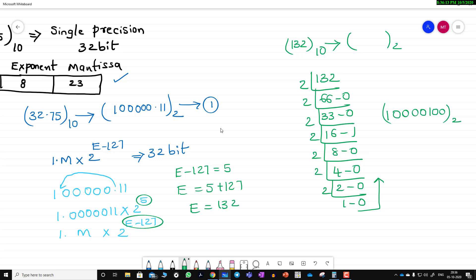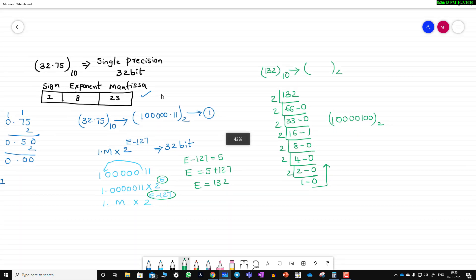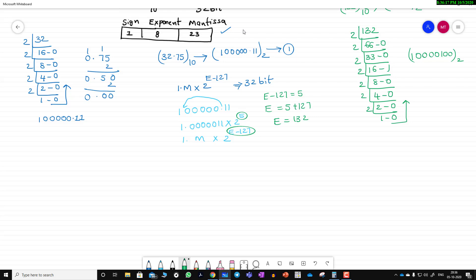This is the format: sign bit, followed by exponent, then mantissa. As the given number is positive, it should be represented with 0. If it's negative, it should be represented with 1. The sign bit will be 0, and 10000100 is the answer for the exponent.